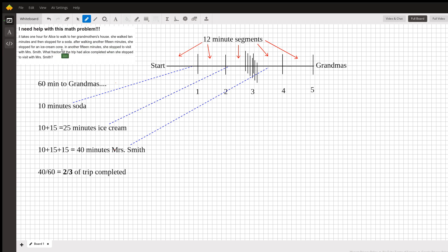She walked 10 minutes and then stopped for a soda. After walking another 15 minutes, she stopped for an ice cream cone. Another 15 minutes, she stopped to visit with Mrs. Smith. What fraction of the trip had Alice completed when she stopped to visit with Mrs. Smith?